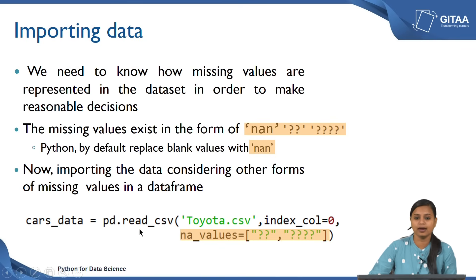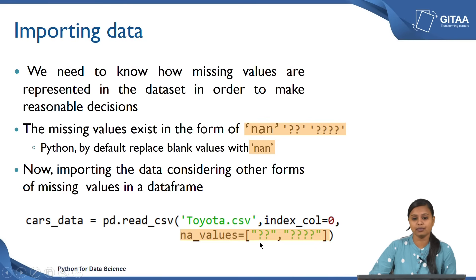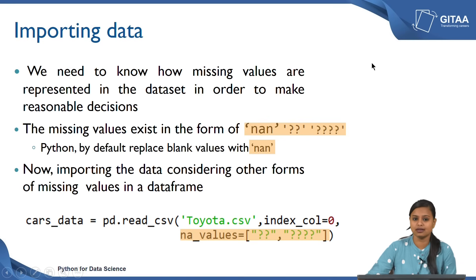I am using the same read_csv command from the pandas library, with pd as the alias, the input being the Toyota CSV file, and the index set to 0 so that the first column is treated as the index column. I have added another argument called na_values, inside which I have given double question mark and four question marks to say: consider all these values as NaN values. Now we have seen how to import the data by considering all forms of missing values.